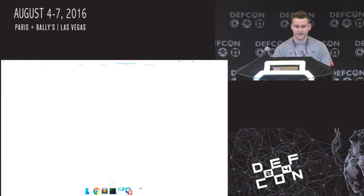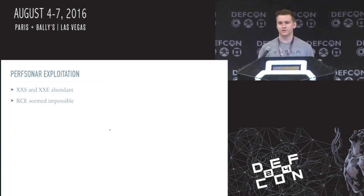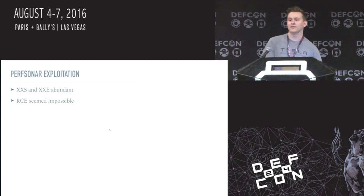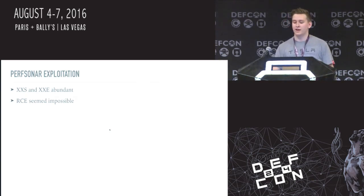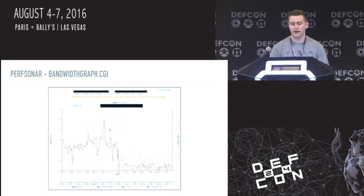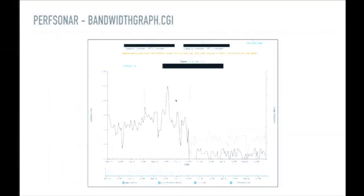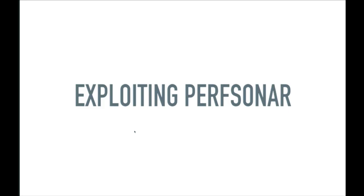At this point I was able to find cross-site scripting kind of everywhere, but XSS is kind of lame — you have to get an admin to click a link while they're logged in and no one logs into these devices that often. There seemed to be a lot of XXE as well. Getting RCE just seemed like an impossible task. I actually put it down for about a month and finally came back to it later. I found something called bandwidth_graph.cgi — the endpoint that handles graphing historical bandwidth data. Looking at the source code, there's an eval call on an attribute from the XML data that is sent in, and tracing this all the way back up we're going to get into exploiting it now.